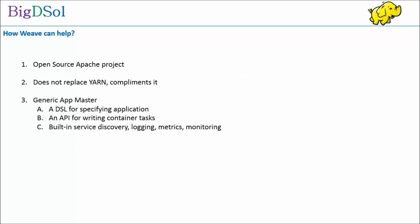Weave is coming up to help with YARN implementation. It is an open-source Apache project with a generic Application Master, providing services like service discovery, logging, metrics, monitoring, and more.